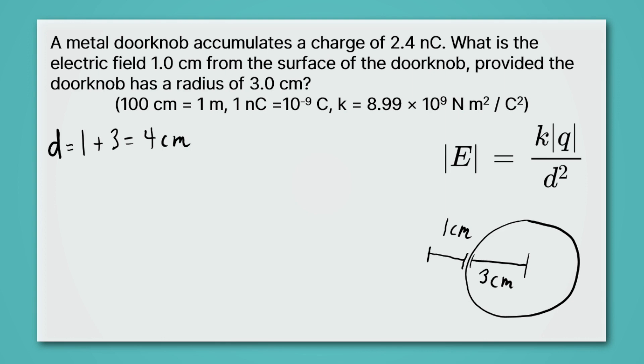Then we recall that the coulomb constant has meters in it, not centimeters. And so we need to convert from centimeters to meters before we can use our equation. We'll get rid of centimeters by putting a hundred centimeters on the bottom. And we'll put one meter up top. So the centimeters cancel out. And when I divide four by a hundred, I'm going to get 0.04 meters as the distance.